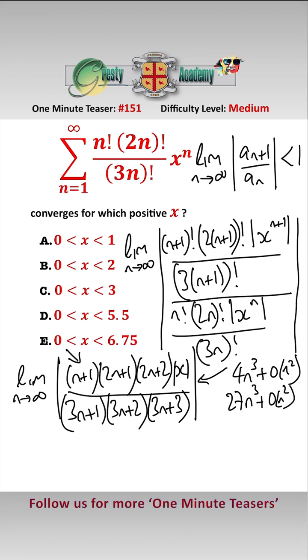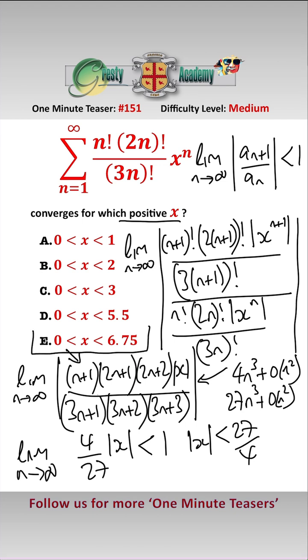And so therefore this limit becomes equal to the limit is 4 over 27 mod x and we need that to be less than 1, i.e. we need mod x to be less than 27 over 4 and as we're only looking for positive x therefore the range of x for which it converges is x between 0 and 6.75.